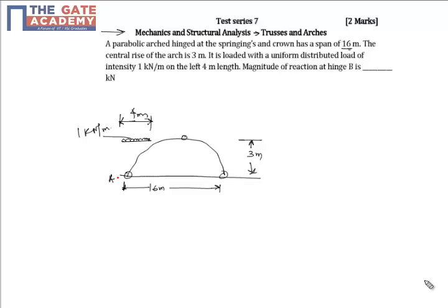Magnitude of reaction at hinge B, where this is point A, this is point C, this is point B of the arch. So what we will do?